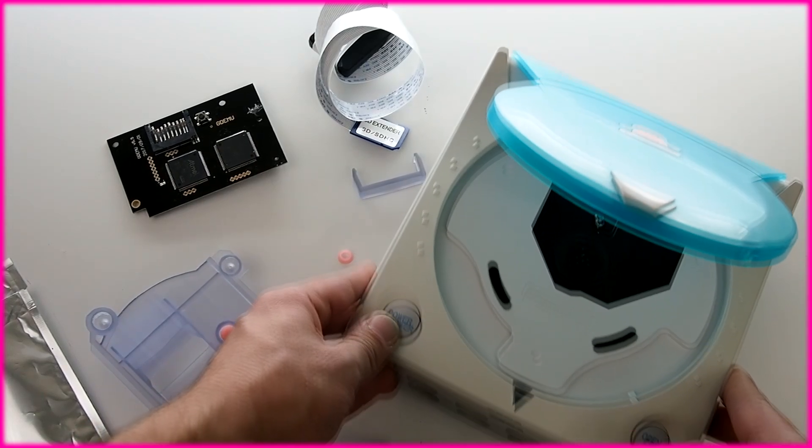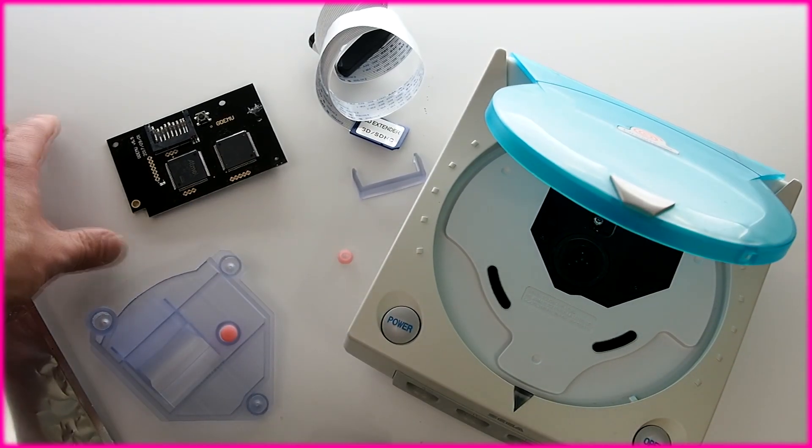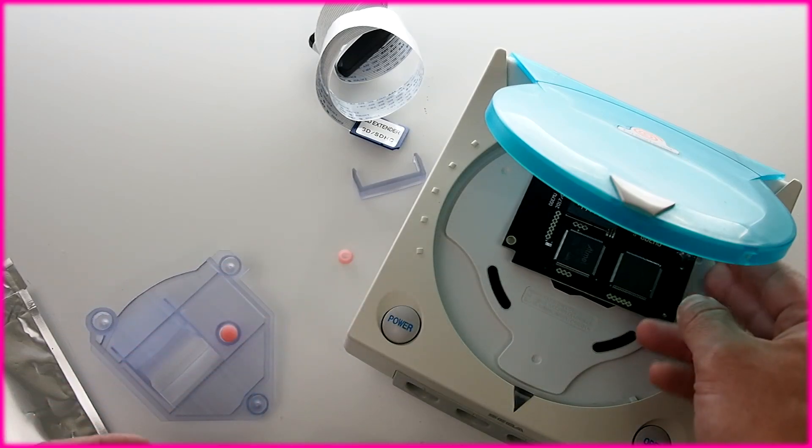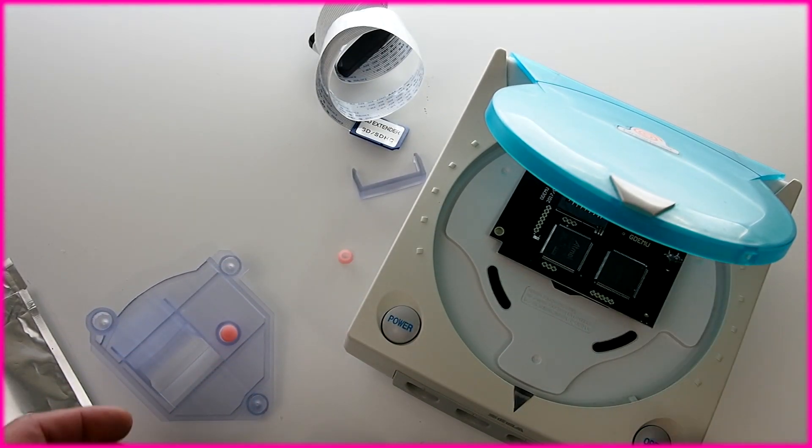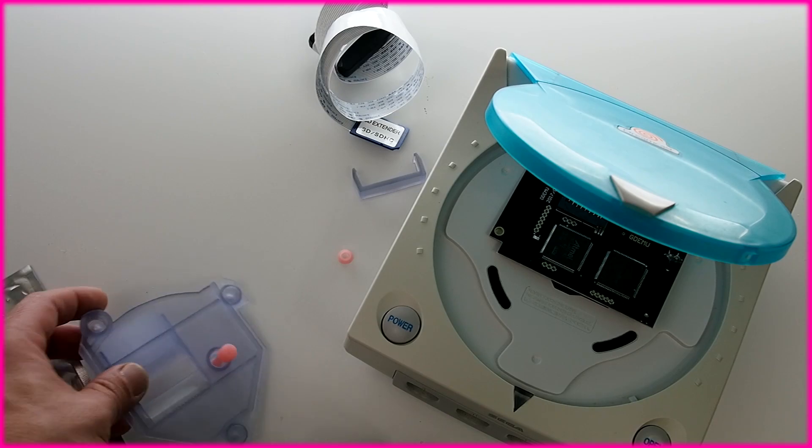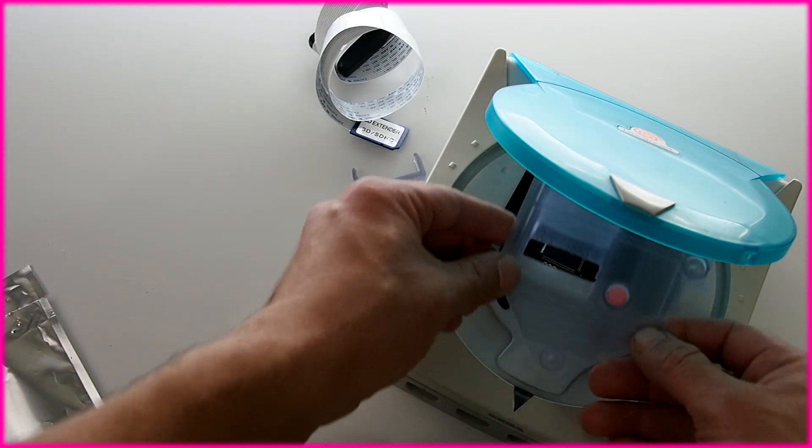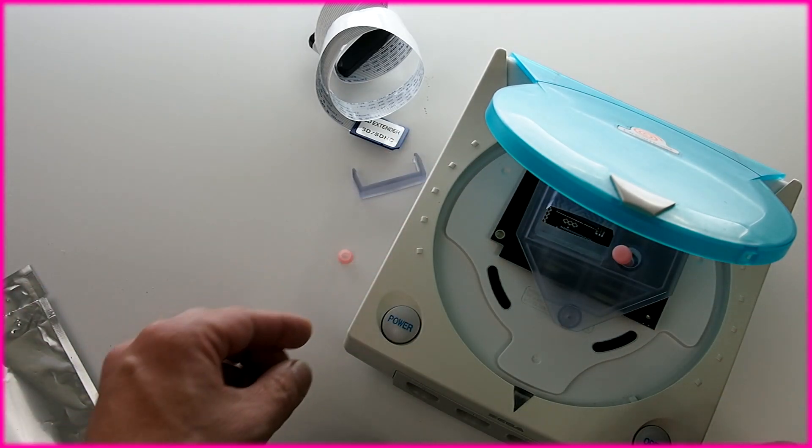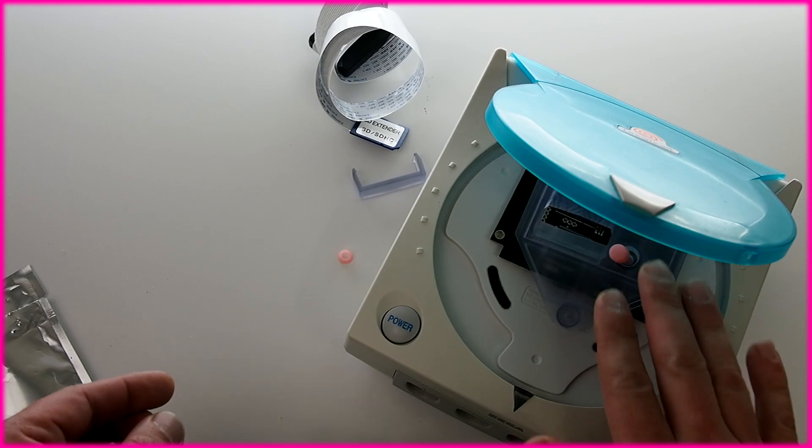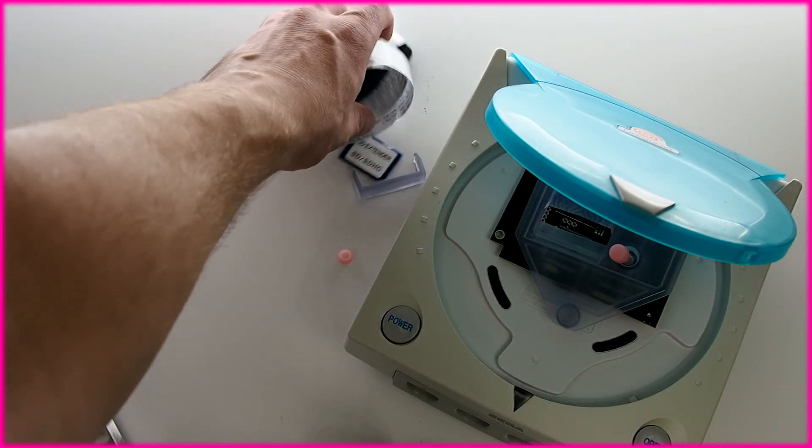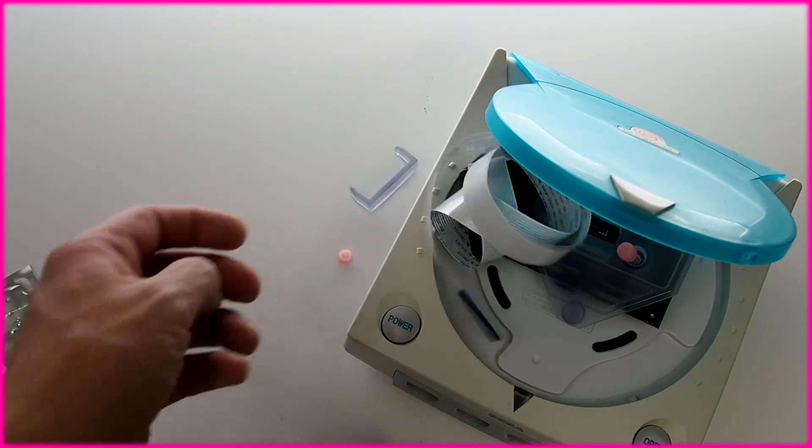So step one, you pick up the GDMU and then you install it in place. And then of course you don't want it to look like trash so you do install a cover on it of course. And then you have the SD extender which needs to go in final. And there we are. We did it everyone. Good job.